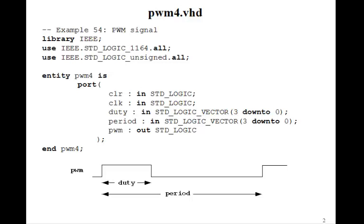Let's take a look at this VHDL program. We want to generate this PWM signal, where duty is the amount of time the PWM signal is high and period is the period of the PWM signal.